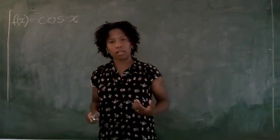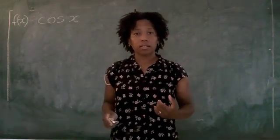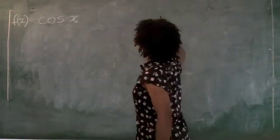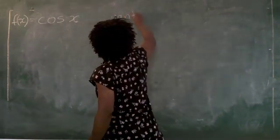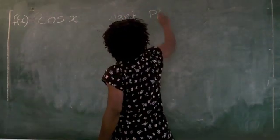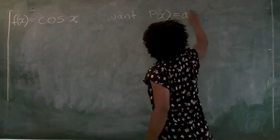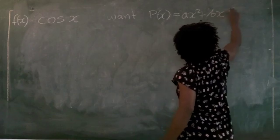Just for starters, to get the idea behind Taylor polynomials, let's find the second degree Taylor polynomial for cosine of x. So we want a polynomial called p of x that's equal to ax squared plus bx plus c.